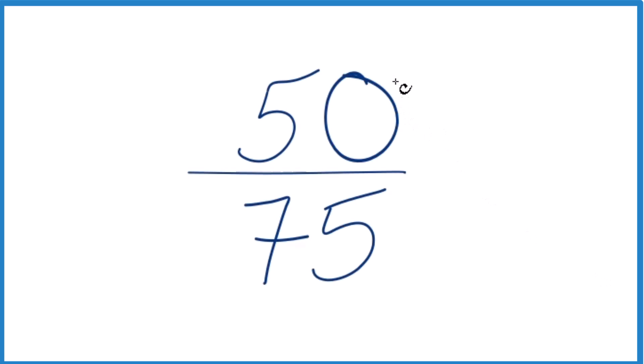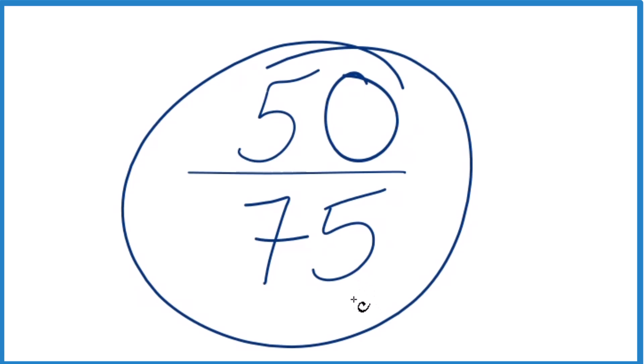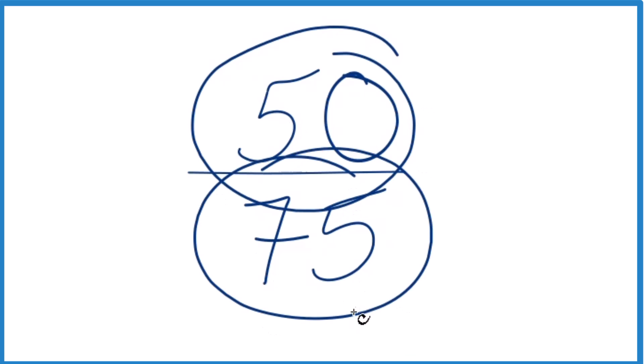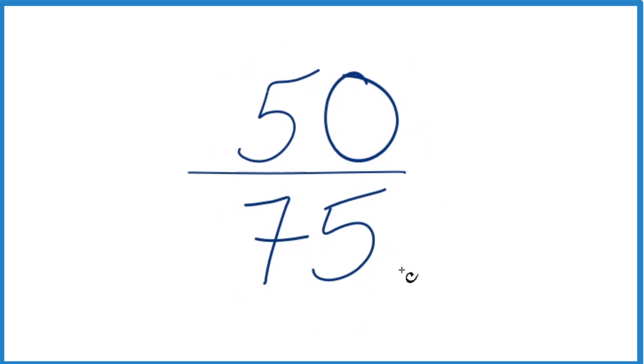So let's simplify the fraction 50/75. And here's how we do it. We want to find another fraction that's equivalent to 50 divided by 75. It has the same decimal value, just that we've simplified or reduced it to lowest terms.